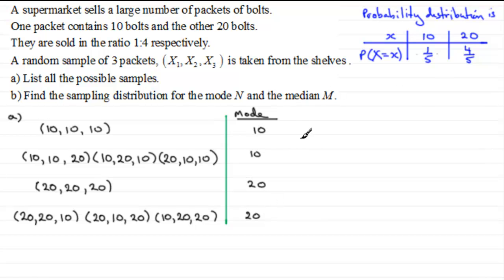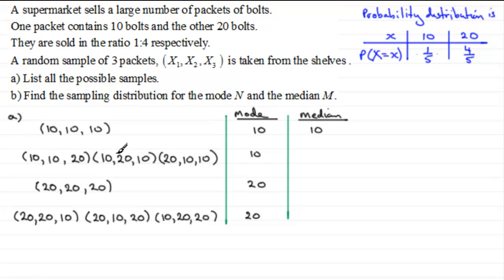We also need the median M for each sample. For the sample 10, 10, 10, already in order, the median is 10. For the samples with two 10s and one 20, arranged in order the middle value is 10, so the median is 10 for each. For 20, 20, 20 the median is 20. And for the three samples with two 20s and one 10, when arranged in order the median is 20 in each case.